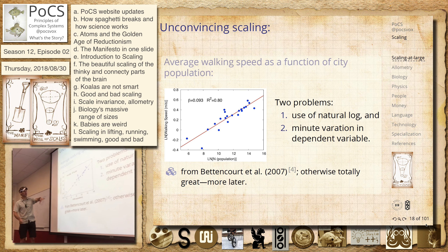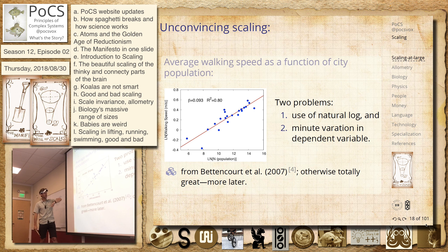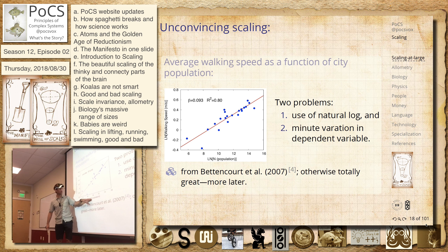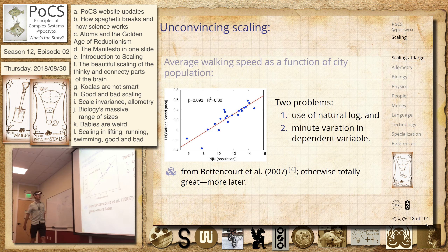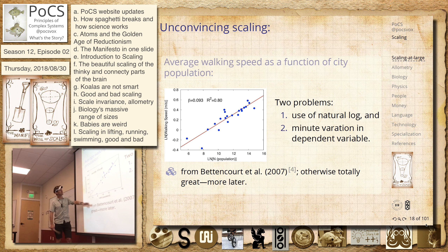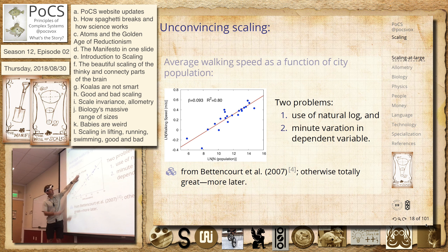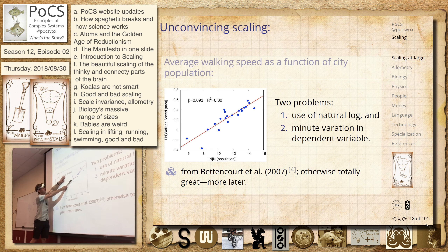I'll show you some more of their work later when we talk about cities. They use natural log, which is a debacle because you feel like there are many more orders of magnitude until you realize they've done something sneaky. At least they put 'L' in, so they tell you that. But this is not good — this is a very weak scaling.